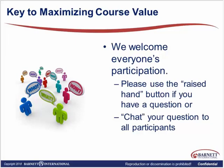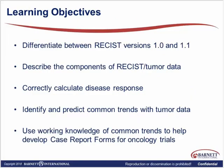Let's look at our objectives for today's course. First, because there has been a modified RECIST version, we'll differentiate between RECIST versions 1.0 and 1.1. We'll describe the components of RECIST tumor data and correctly calculate disease response, identify and predict common trends with tumor data, and then use a working knowledge of those trends to help develop case report forms for oncology trials. This is important regardless of your role across research teams — whether you're a project manager, medical monitor, CRA, investigator, or site staff — it's critically important to understand and consistently apply these criteria.